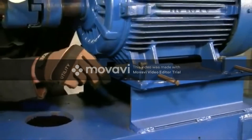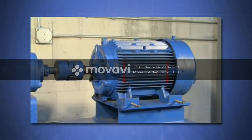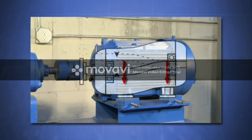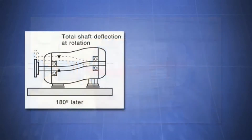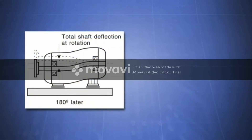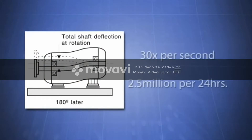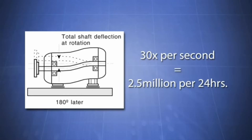Machines are built out of many parts machined within close tolerances. The distortion of a machine from soft foot causes all those precision machined parts to move out of alignment. Soft foot also causes shaft deflection. A typical machine running at 1800 RPM with a soft foot condition could force the shaft to bend back and forth 30 times a second, or two and a half million times every 24 hours. Think about what this increased vibration would do to the reliability of your machine.